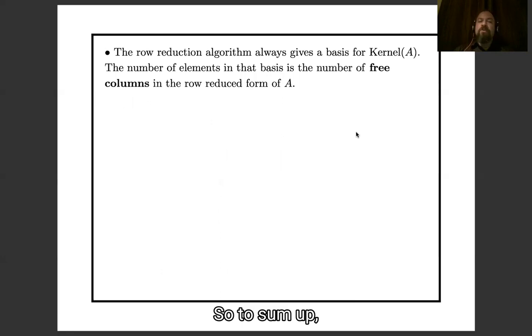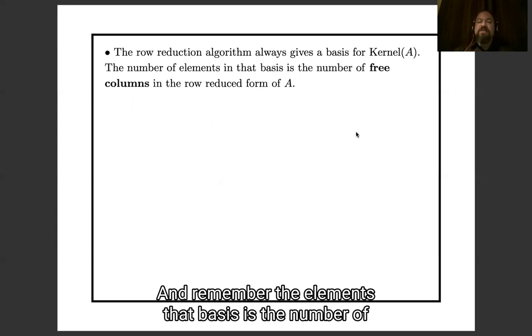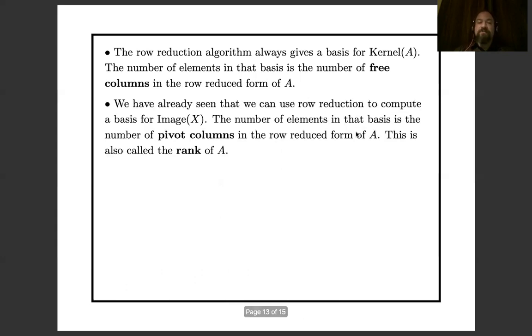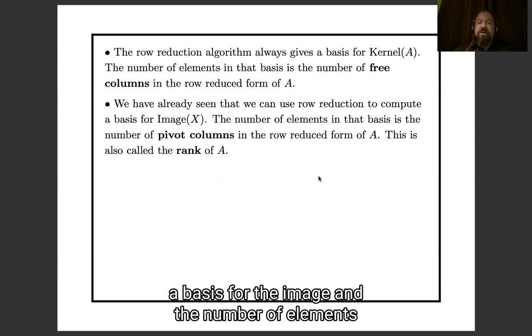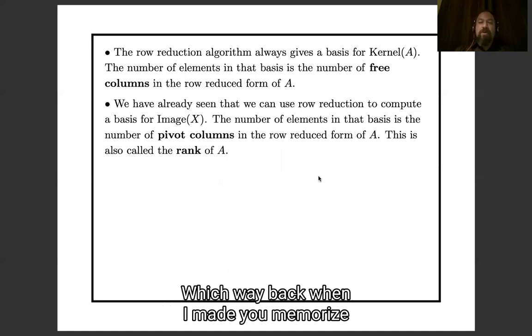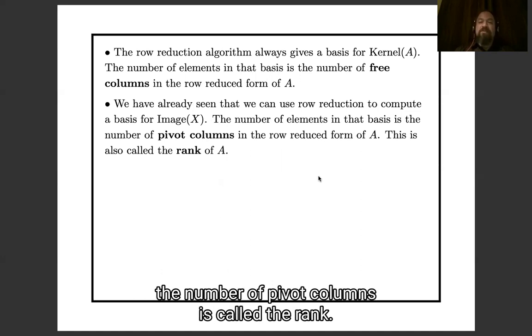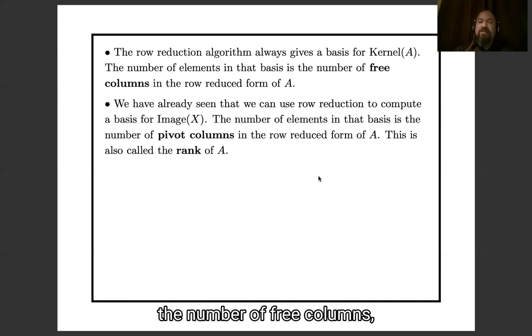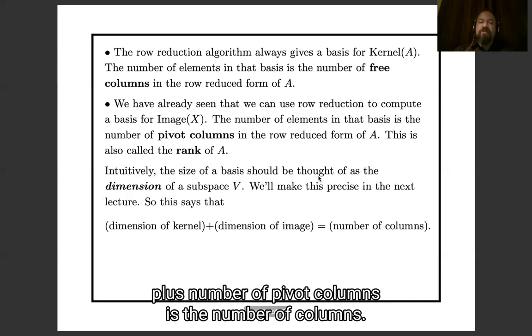So to sum up, the row reduction algorithm always gives a basis for the kernel, and the number of elements of that basis is the number of free columns in the row reduced form of A. And going back earlier, we also saw that we could use the row reduction to compute a basis for the image. The number of elements of the basis for the image is the number of pivot columns, which way back when I made you memorize the number of pivot columns is called the rank. So we can put these together and say, oh, the number of free columns plus the number of pivot columns is the number of columns.